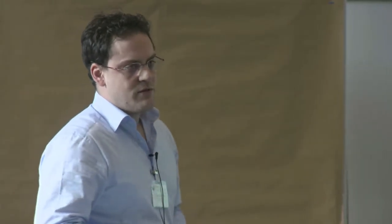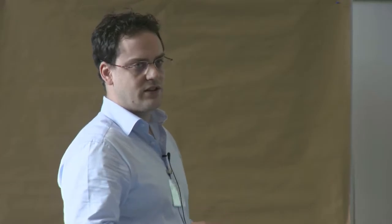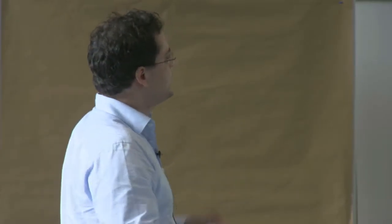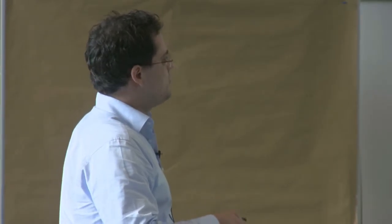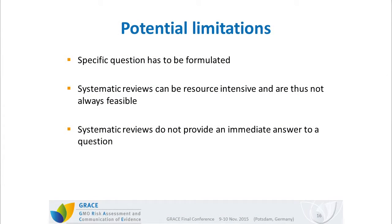Systematic reviews are not without limitations. First, you have to formulate a specific review question, which can be challenging in research areas that are quite fluid. Second, systematic reviews can be highly resource-intensive in terms of manpower, money, and time, and are not always feasible. Third, systematic reviews do not provide an immediate answer — we are talking months or even a year until one is finalized. If you need an answer within a month, a systematic review would not be the appropriate tool.